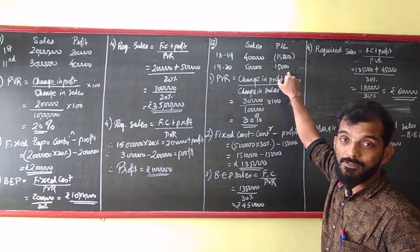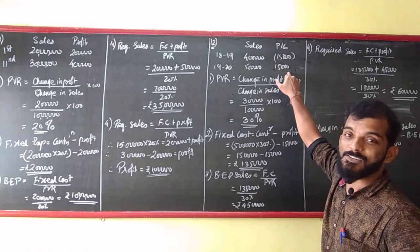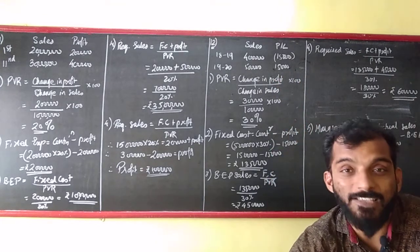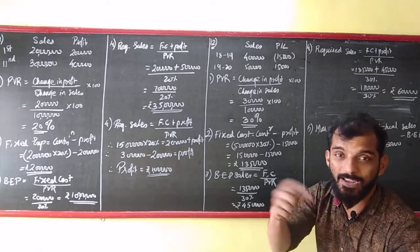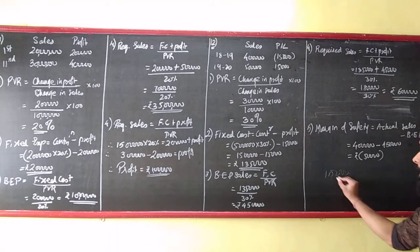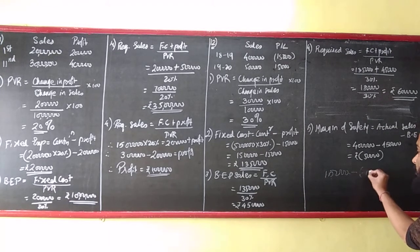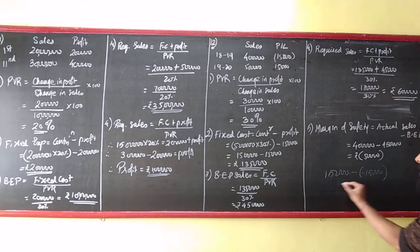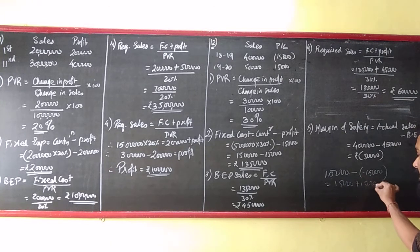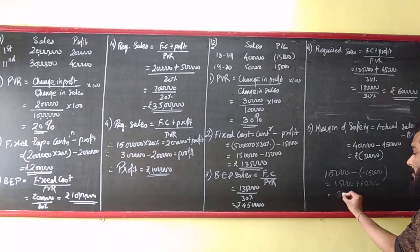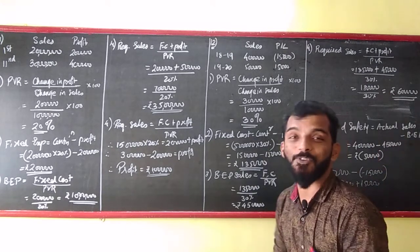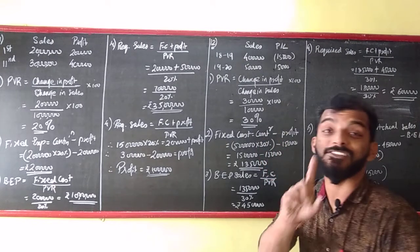So changing profit is what? This is a loss of 15. Changing profit is what? Second year minus first year. Correct? So 15,000 minus minus 15,000. Right? So that is 15,000 plus 15,000. So the change in profit is what? Not zero.